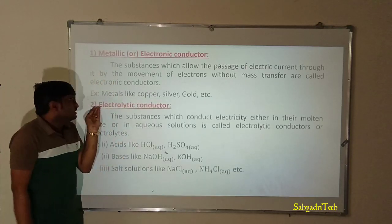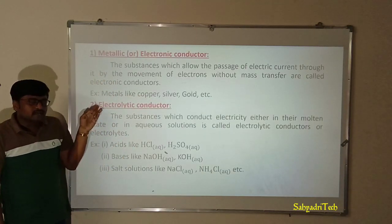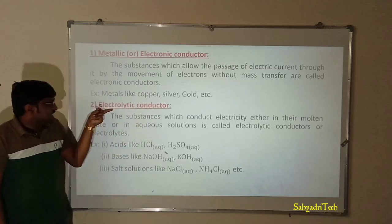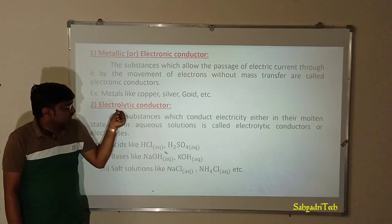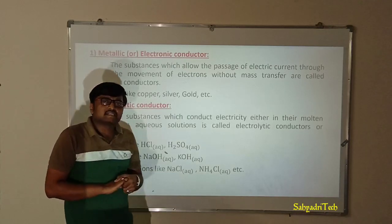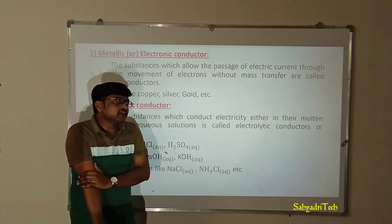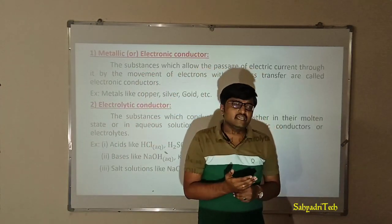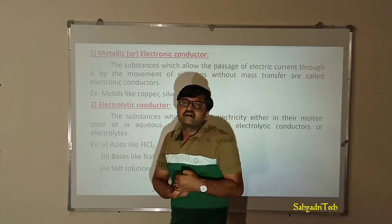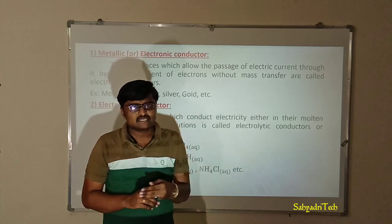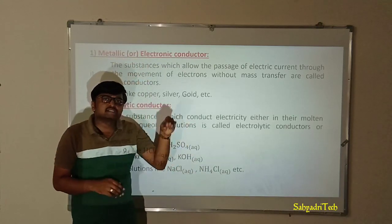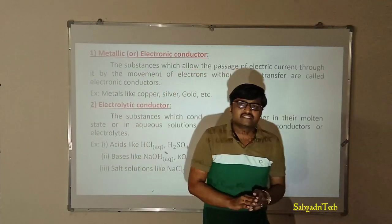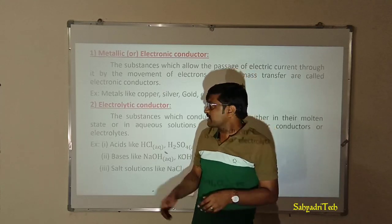Coming to the second type — electrolytic conductors, also called ionic conductors. In the case of electrolytic conductors, electrolytes act as conductors. Electrolytes are substances which undergo dissociation either in their molten state, in their aqueous phase, or in a suitable solvent. When a substance undergoes dissociation in any kind of medium, it is named an electrolyte.